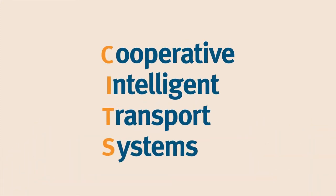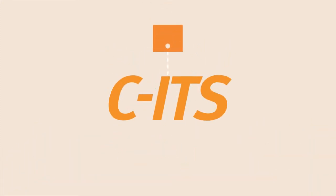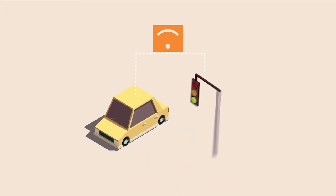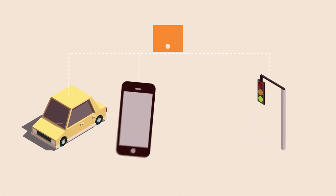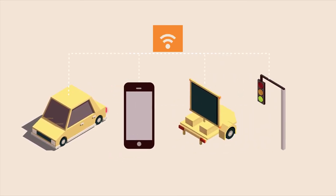Co-operative intelligent transport systems enable safe, interoperable, wireless networked communication, which means that vehicles, infrastructure, personal mobile devices and transport management systems can now share information about the road.